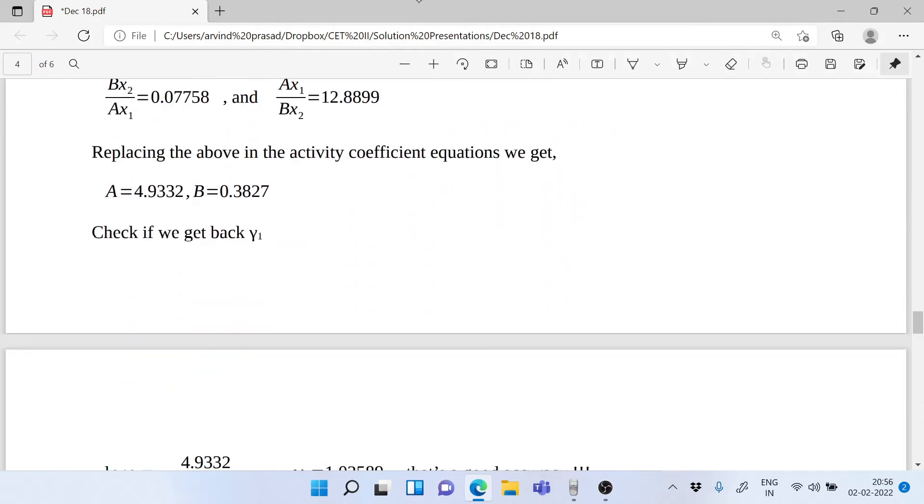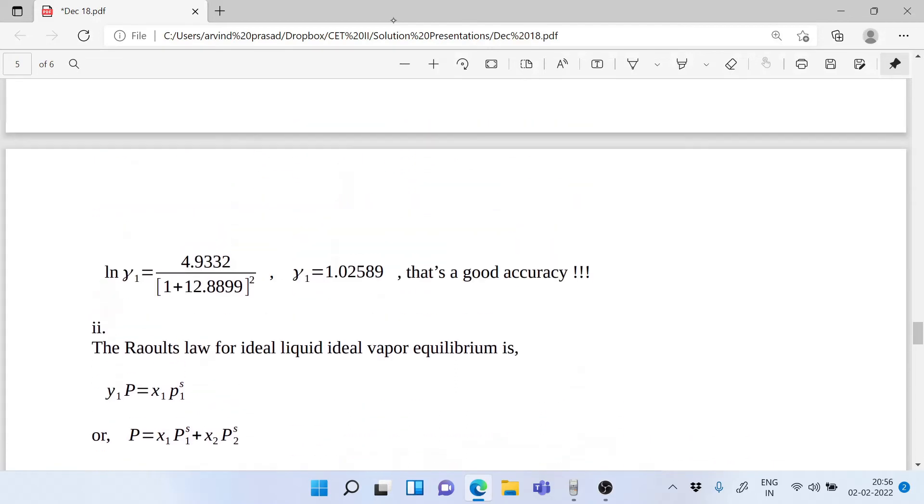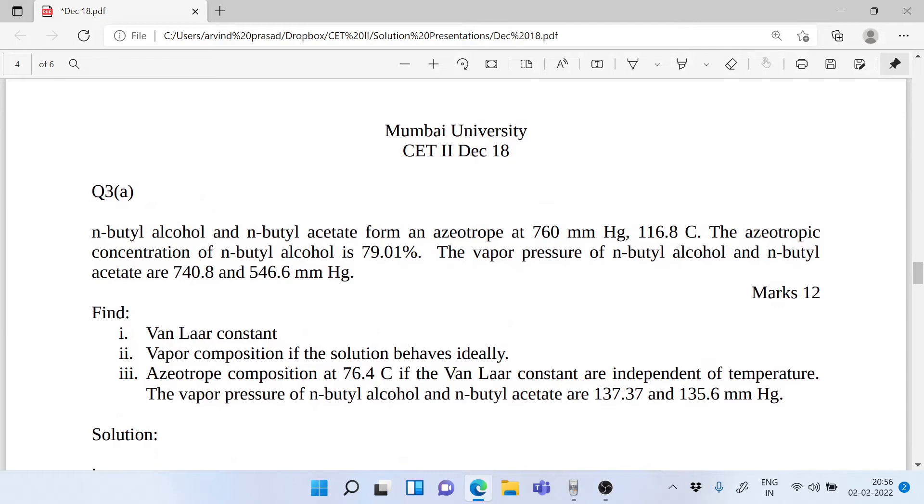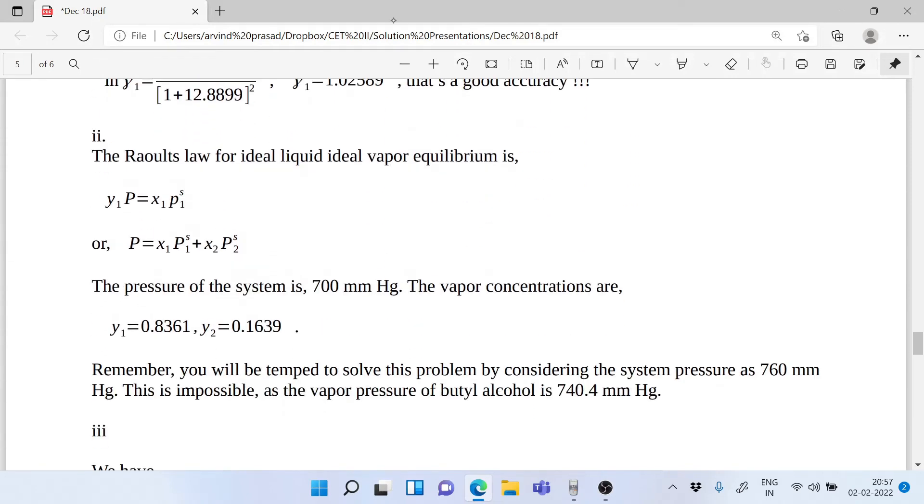Now for the second question, for ideal systems you have y₁P = x₁P₁ˢ, so P = x₁P₁ˢ + x₂P₂ˢ for an ideal system. The pressure of the system is 700 mmHg. Now how do you get this 700 mmHg? You replace the value of 0.7901, and then you get the value of P. So 0.7901 into P₁ˢ, P₁ˢ is given in the problem, and 1 minus 0.7901, P₂ˢ is also given to you.